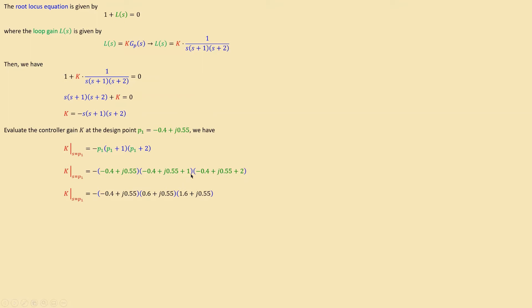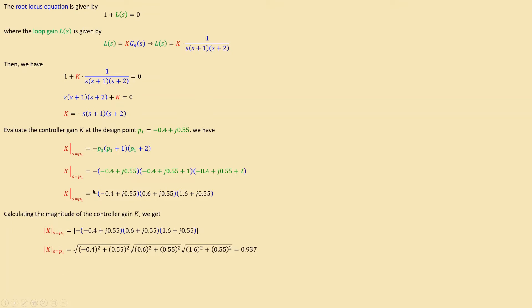To find the required controller gain, we calculate the magnitude of k evaluated at the design point. Taking the square root of the sum of squares of real and imaginary parts for each term gives: sqrt(0.4² + 0.55²) × sqrt(0.6² + 0.55²) × sqrt(1.6² + 0.55²), which results in approximately 0.937.